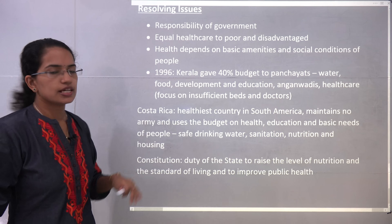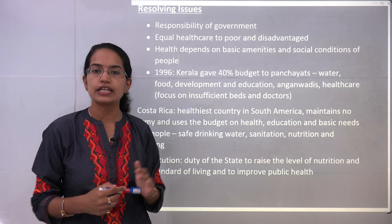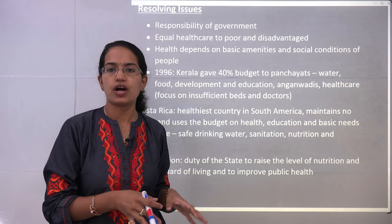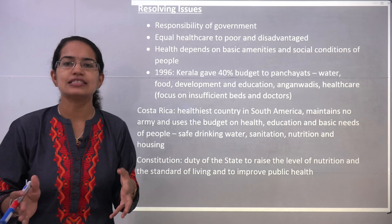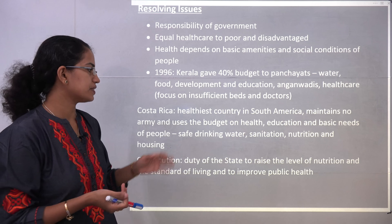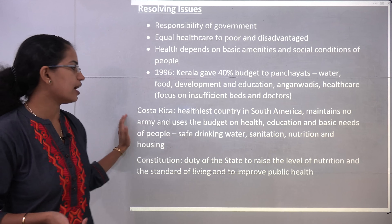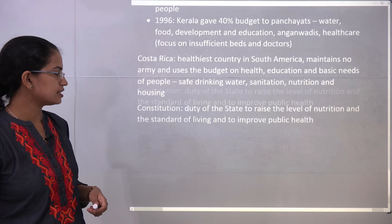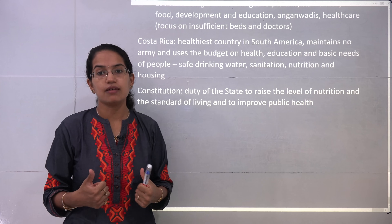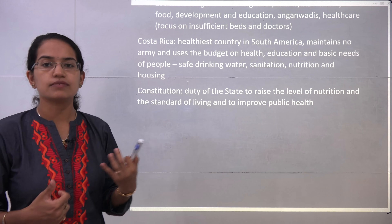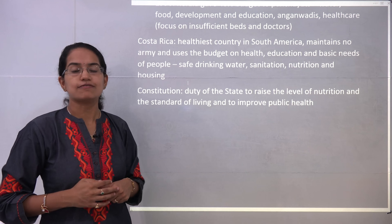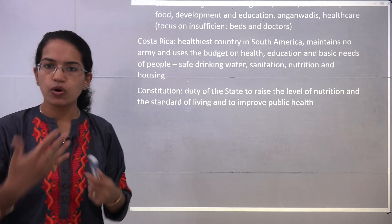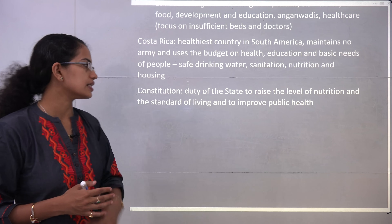Similarly, Costa Rica decided not to spend any money on defense services, diverting all funds from army maintenance to healthcare facilities. As a result, they have ample funds going into healthcare, safe water, sanitation, nutrition, and housing, improving basic amenities and the standard of living in that nation. Costa Rica is a unique example, and India can definitely take points from it — not to replicate the model exactly, but to take ideas for providing more focus on basic amenities and the healthcare system.